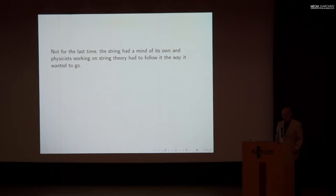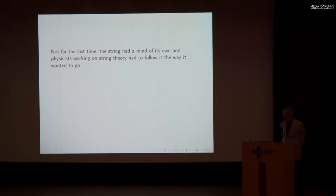Dozens of papers were written with the goal of not predicting quantum gravity. But this attempt was not successful. Attempts to tinker with the quantization of the relativistic string so as to not predict the graviton were not successful. Physicists working on the theory had to accept that, if it's anything, string theory is a theory of elementary particles interacting via quantum gravity along with other forces. Not for the last time, the string had a mind of its own, and physicists working on string theory had to follow it the way it wanted to go.